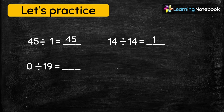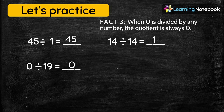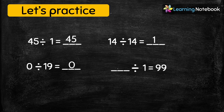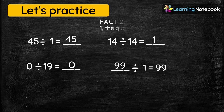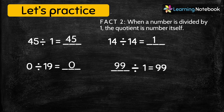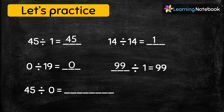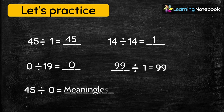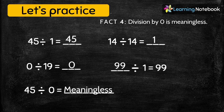Third question: 0 ÷ 19 = ? The answer is 0, because when zero is divided by any number, the quotient is always zero. Next: blank ÷ 1 = 99. The answer is 99, because when a number is divided by one, the quotient is the number itself. Last question: 45 ÷ 0 = ? The answer is meaningless, because division by zero is meaningless.